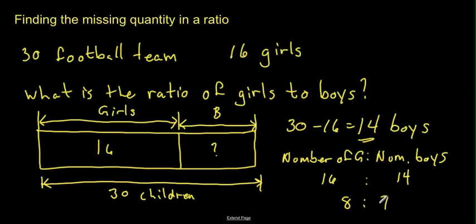So, for every 8 girls, there are 7 boys. So, the ratio of girls to boys is 8 to 7. And that would be our final answer, because nothing else will go into 8 and 7 evenly.